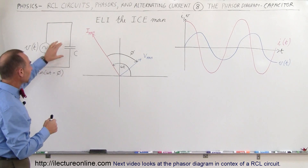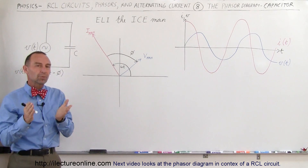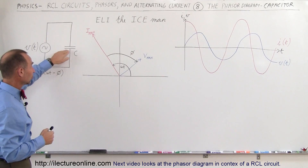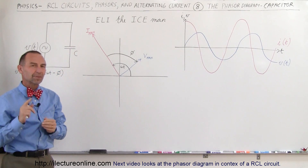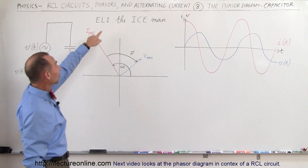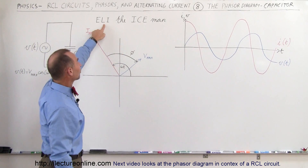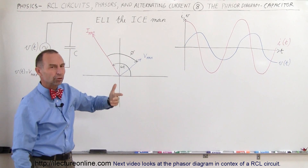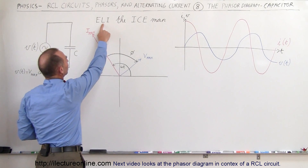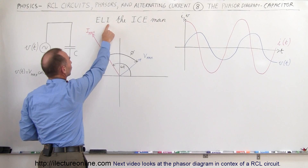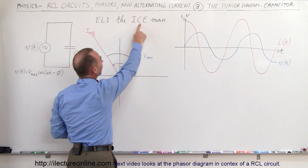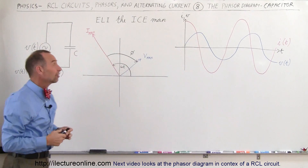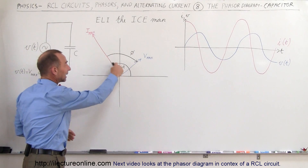Since we only have a capacitor, there's going to be a phase difference between the voltage across the capacitor and the current in the circuit. For a capacitive circuit, the current will lead the voltage by 90 degrees. A nice sentence to help us remember that is called ELI the ICEman: L stands for inductor, C stands for capacitor, I stands for current, and E stands for EMF or voltage. In an inductive circuit the voltage leads the current, but in a capacitive circuit the current leads the voltage, so the current leads the voltage by 90 degrees.